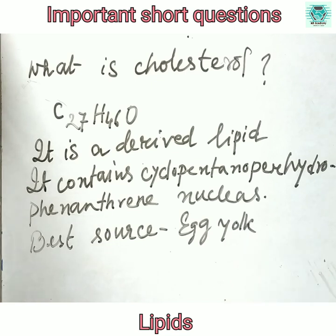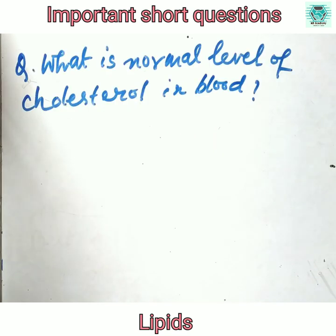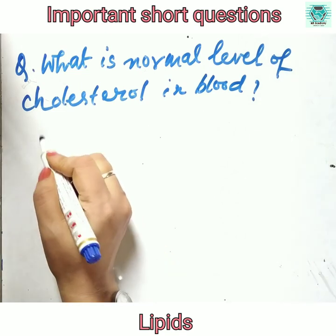Moving to the next question: what is the normal level of cholesterol in blood? The answer is 140 to 230 mg per 100 ml.